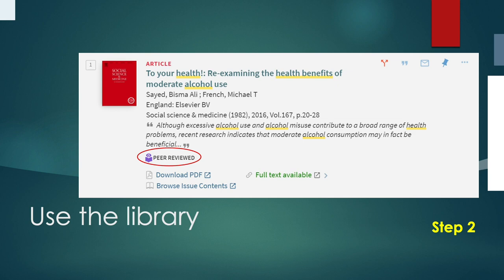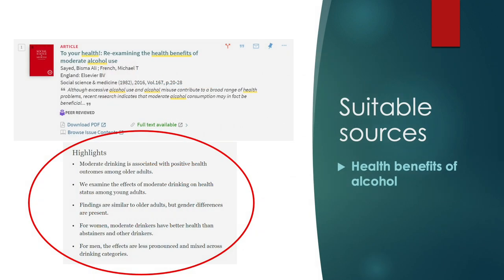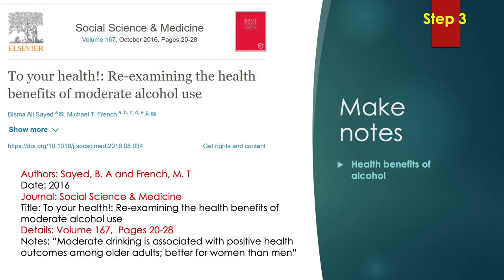Looking at the article in more detail, I can find the highlights — it's a very user-friendly article and easy to read. Step three: I need to get the details from the article — the authors, the date, the journal name, the title, and some notes about the content. For example, moderate drinking is associated with positive health outcomes among older adults and is generally better for women than men.